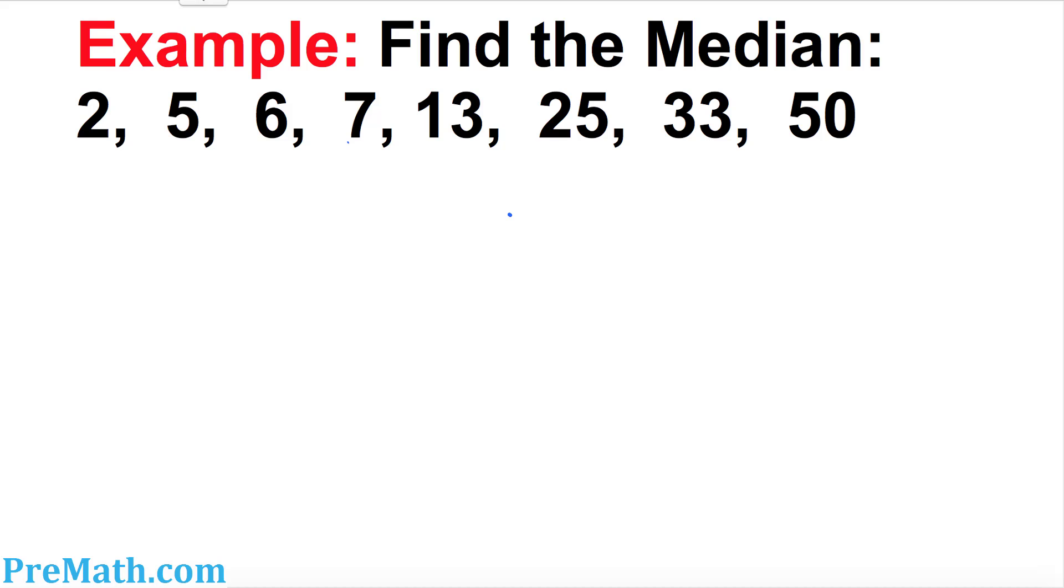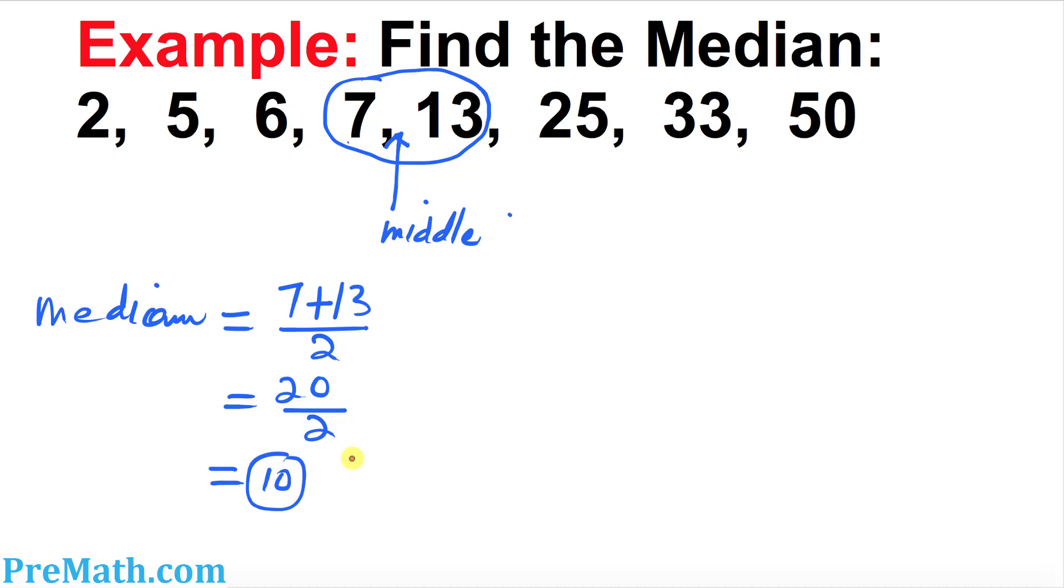And finally, in this example, we've been asked to find the median. What is the median here? The median is the middle number, right in between. When we have two numbers and we want to find the middle number, we find the average of these two numbers. So median is you add these numbers up, 7 plus 13, and always divided by 2. That turns out to 20 over 2. So our median is 10. That's our answer.